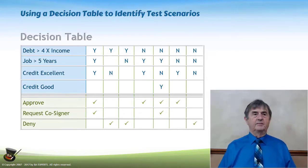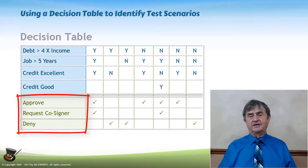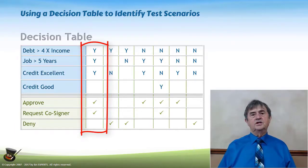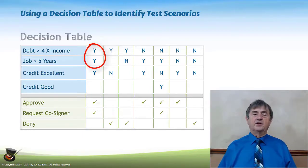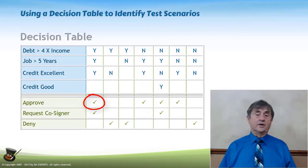The decision table fundamentally lists all the conditions at the top — in this case shaded in blue — and it lists all of the actions or outcomes from the combinations of conditions at the bottom in green. Looking at the first column, we are identifying a scenario where the debt is greater than four times the gross income, you've been on the job for more than five years, and your credit is excellent. When all three conditions are met, you can see in the lower half we're going to approve that request and, however, request a cosigner.